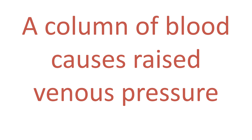Blood has weight, so a column of blood is going to weigh something. Normally the column of blood all the way from the right atrium down to the ankles is broken up into sections by the valves. But if the valves are diseased and not working properly, that column of blood becomes one long column, getting heavier as it goes down, which increases the hydrostatic pressure in the vessels. This next video clip attempts to graphically explain this pathological situation.